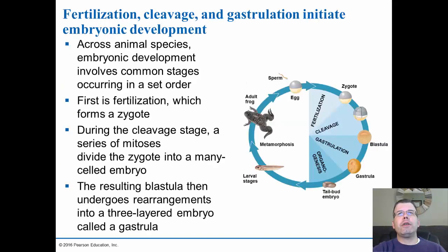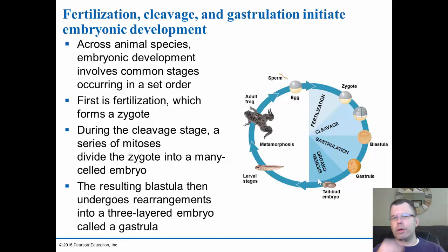Then you have organogenesis, which is the big step where you start developing the organs. The first thing that happens is fertilization — that's where the sperm and egg come together and you form a diploid zygote. The zygote is one cell with the full number of chromosomes. Then you get this division with no growth. The zygote is the same size as this ball of cells, which is about a 16- to 32-cell stage. The overall number of cells changes, but the overall size does not. That's called cleavage.